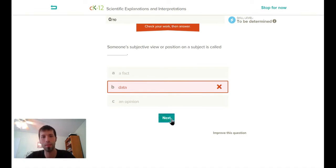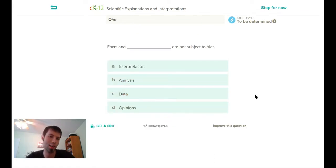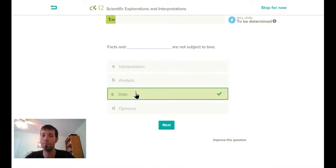I got it wrong. Next. If you look at the top, it says zero out of ten. It's always gonna say zero out of ten. Let's look at this next one - facts and blank are not subject to bias. I think the correct answer is data. Yep, so now I've got one out of ten. I got one question correct.